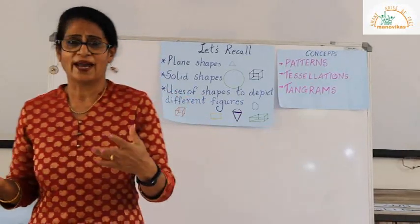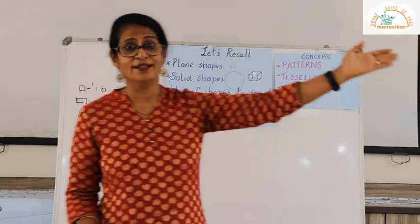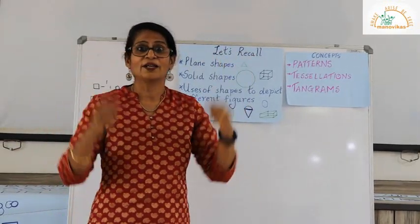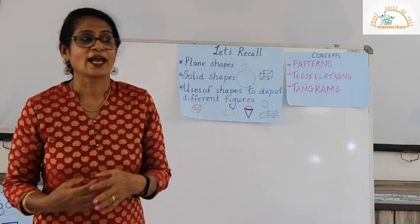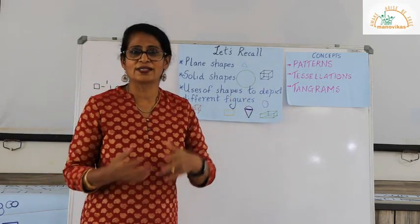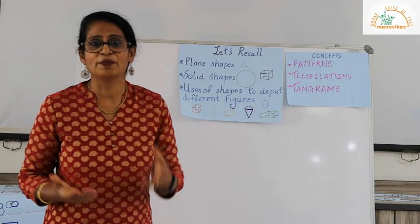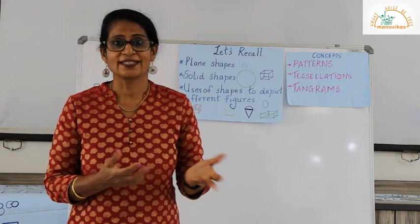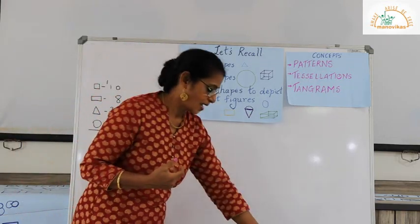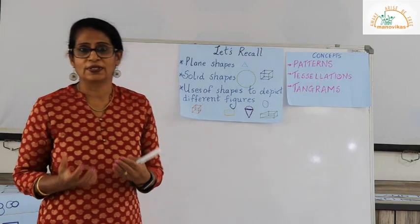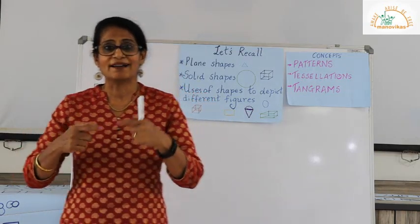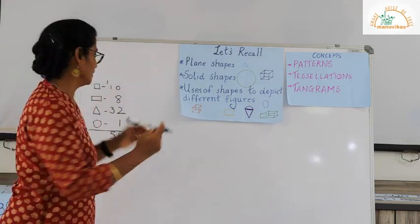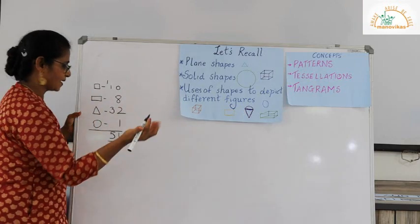We see patterns everywhere — on the grills, on dress materials. You can see patterns on teacher's outfit, and on bedsheets and quilts at home. You must be very familiar with patterns. Patterns can be formed with objects, events, and numbers. When the objects, events, and numbers are repeated uniformly in a specific manner, we get what are called patterns.